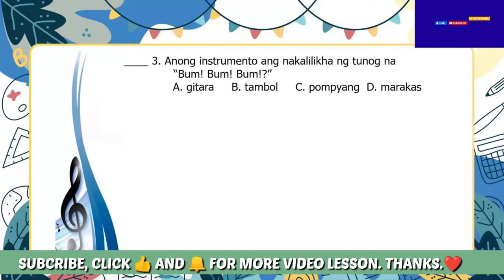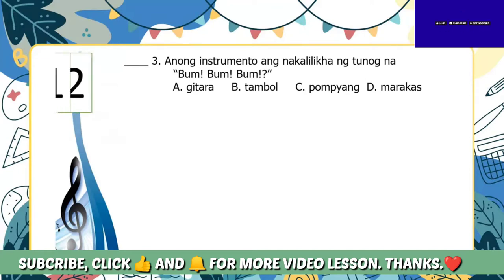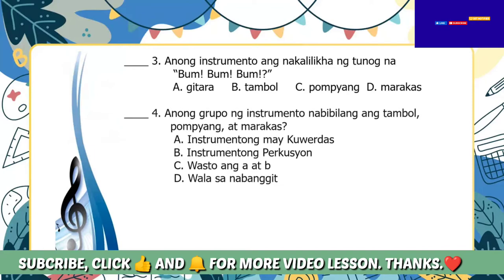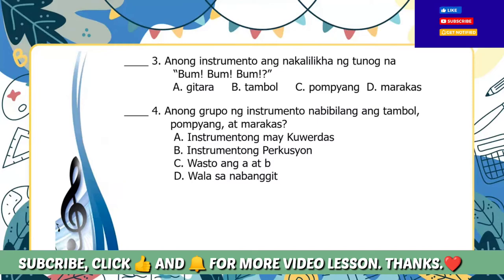Ikatlong katanungan: anong instrumento ang nakalilikha ng tunog na boom-boom-boom? A. Gitara, B. Tambol, C. Pompiang, D. Maracas. Ikaapat na tanong: anong grupo ng instrumento na bibilang ang tambol, pompiang at maracas? A. Instrumentong may kwerdas, B. Instrumentong perkusyon, C. Westo ang A at B, D. Wala sa nabanggit.